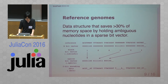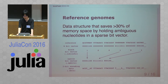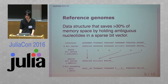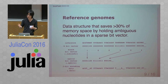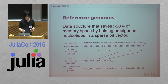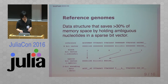The reference genomes data structure saves more than 30% of memory space by holding ambiguous nucleotides in a separate sparse bit vector. It supports random access and iterations like other usual biological sequences, but the performance overhead is very small.